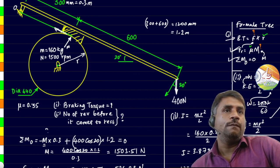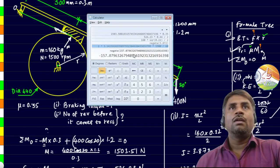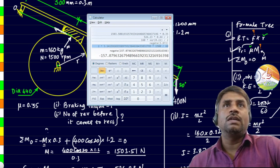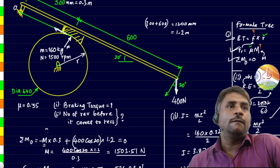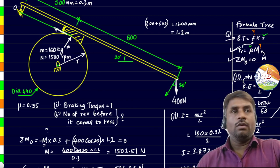Let's go ahead to the next stage, that is omega. That is 2 pi n over 60. N value has been given as 1500 rpm. That value we are getting as 157.08 radians per second.